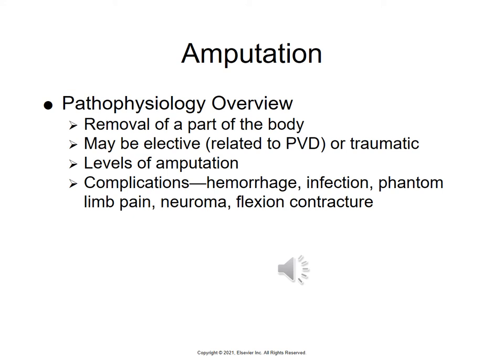Complications of amputation include hemorrhage, infection, phantom limb pain, neuroma, and flexion contracture. Phantom limb pain is a real phenomenon — if patients complain of it, you do give them pain medication. If pain is long-standing, especially if it existed before amputation, any stimulus — including touching any part of the body — may trigger phantom limb pain wherever the limb was removed. A neuroma is a tumor consisting of damaged nerve cells, often forming after upper extremity amputation but occurring anywhere, causing significant pain.